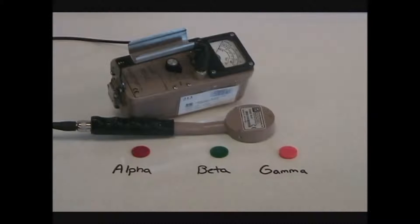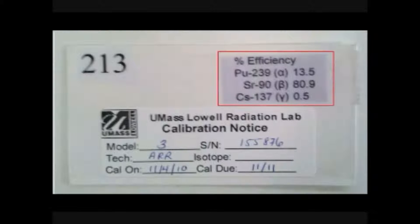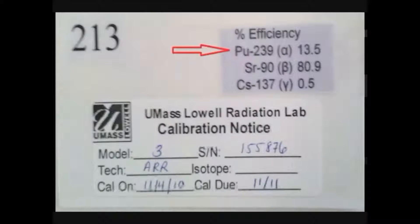On the top right corner of the calibration sticker, there is information regarding the detector's efficiency for detecting alpha, beta, and gamma radiation.